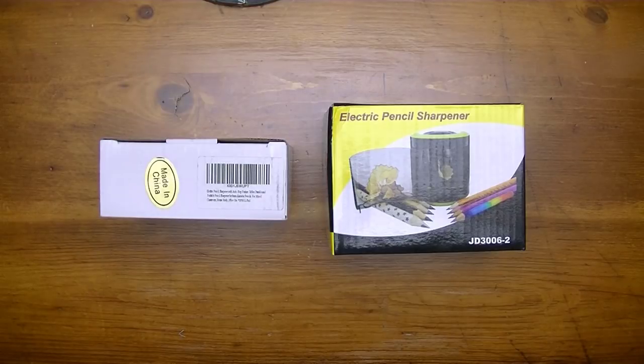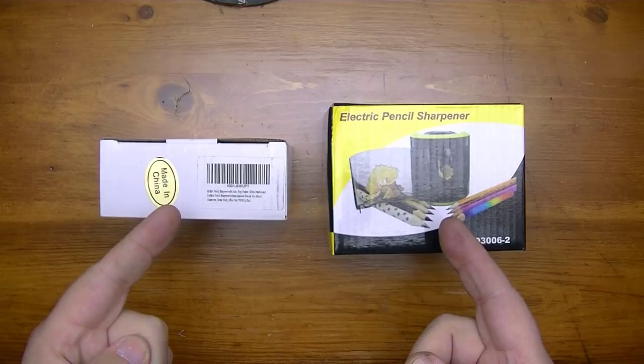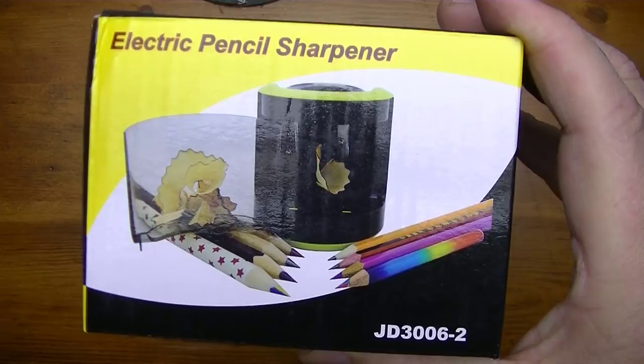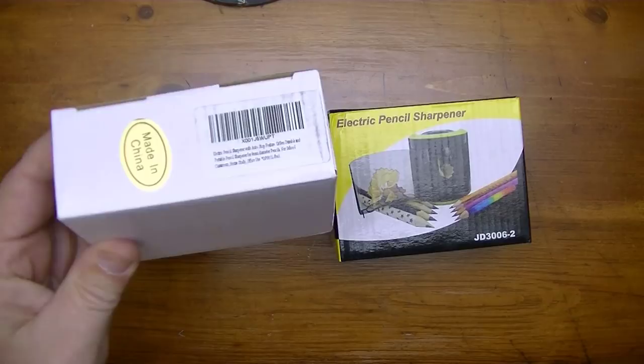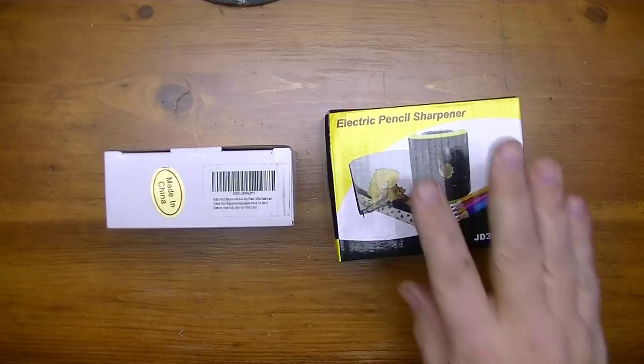Hey everybody, we got two more pencil sharpeners to check out in this video. One says electric pencil sharpener JD306.2-2, and the other is in a white box. Let's check them out.